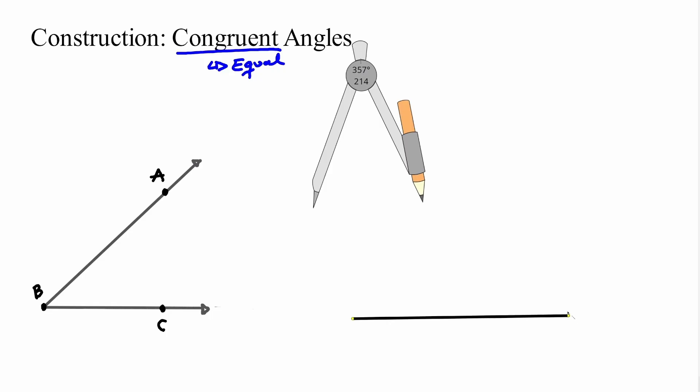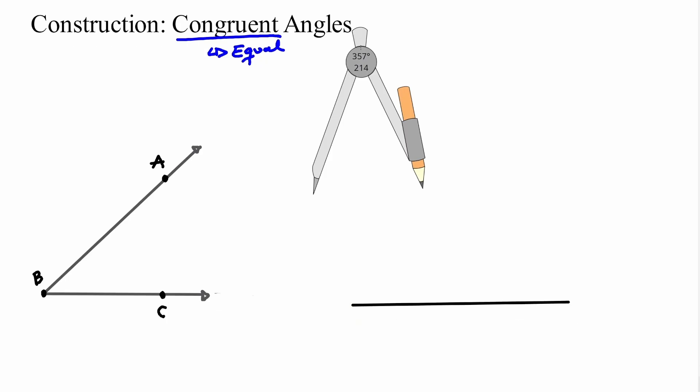It doesn't really matter the direction. Notice that I started my line here — this is going to be the vertex of my new angle. That's it. That's the first step. We just create some line, and the starting point is going to be the vertex of my new angle.